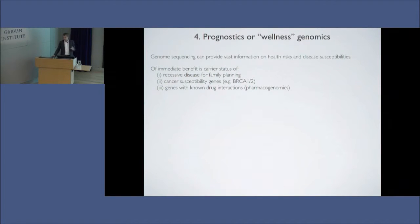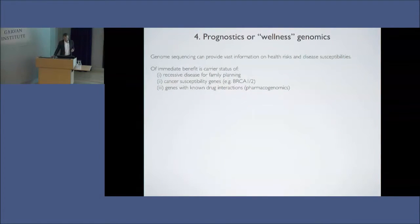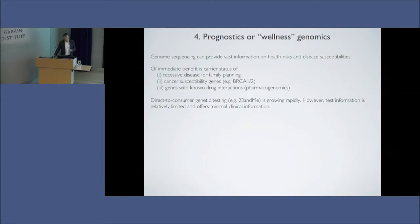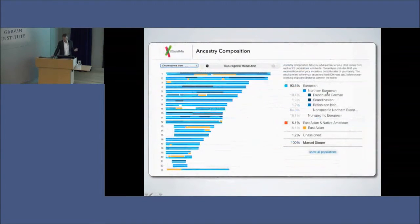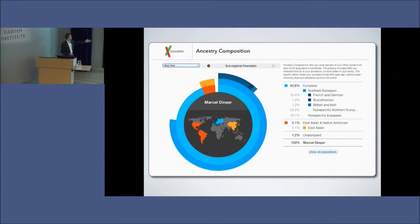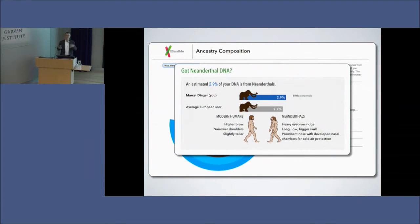I'll just briefly touch on wellness genomics — the idea of actually sequencing a well person's genome to see what you can find out about yourself that might be useful for your life. There are a few things: screening for recessive diseases, looking for your cancer susceptibility, drug interactions, and so on. There are also some direct-to-consumer tests out there where you can find other things about yourself. For example, you can tell your ancestry from your genome — what proportion of your genes come from different parts of the world. In my own case, I can find that I have a proportion of East Asian, Northern European, French, and German backgrounds — which maybe explains my name. You can also see what proportion you are related to even Neanderthals. All this information is actually out there in your genome.